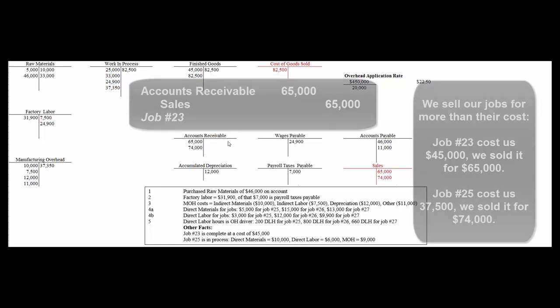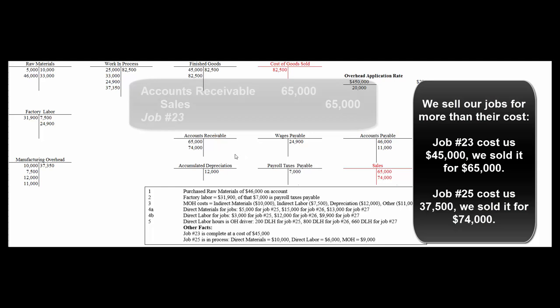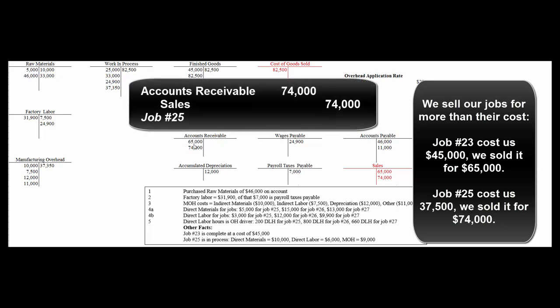The jobs are sold on account. Recording the sales: debit accounts receivable $65,000, credit sales $65,000 for the sale of job 23. Then debit accounts receivable $74,000, credit sales $74,000 for the sale of job 25.